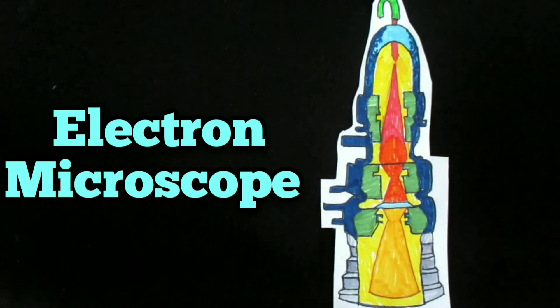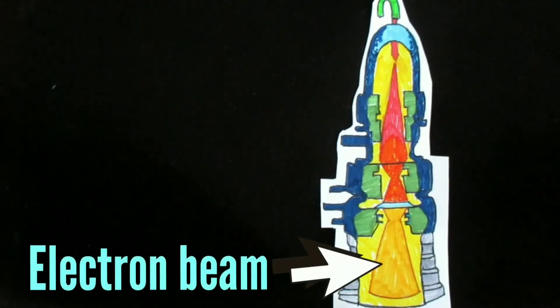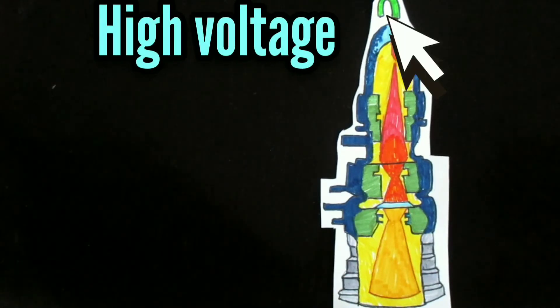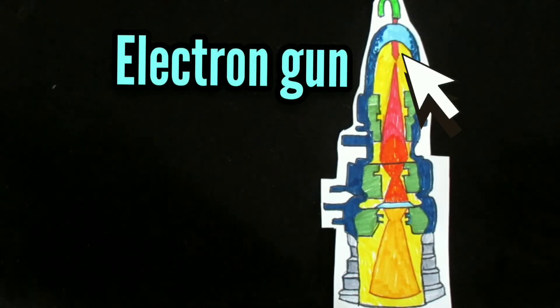Electron microscopes consist of a tall hollow cylindrical column through which the electron beam passes. The top of the column contains the cathode, a tungsten wire filament that is heated to provide a source of electrons.